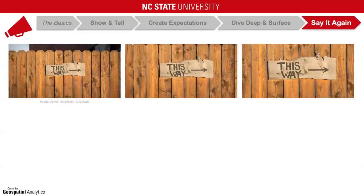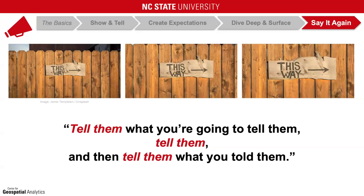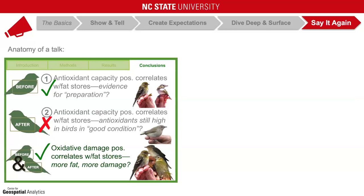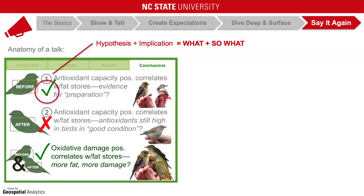We are down to the last tip in the masterclass: say it again. A common rule of thumb is that it takes a person three times hearing something to really remember it, and people are usually more likely to remember the first things you tell them and the last. So there is nothing wrong—and everything right—with a little healthy repetition. One of my favorite things my PhD advisor ever said was: tell them what you're going to tell them, tell them, and then tell them what you told them. For example, if you showed hypotheses at the beginning of your talk, remind your audience what those hypotheses were when you get to the end. In these slides, I restated—yes, in words this time—what my hypotheses were and their implications: the 'what' and the 'so what.' I indicated whether each was supported or not with a simple check mark or an X.